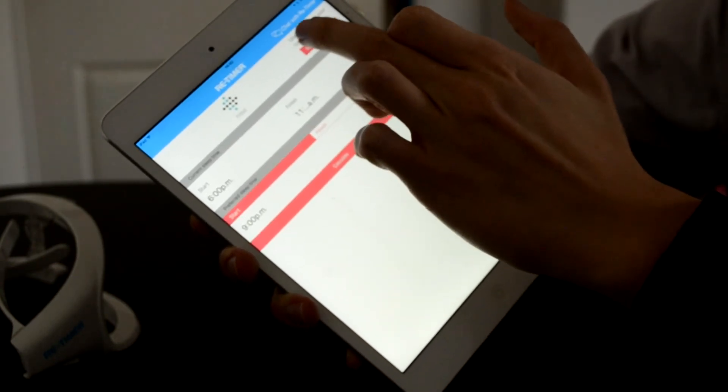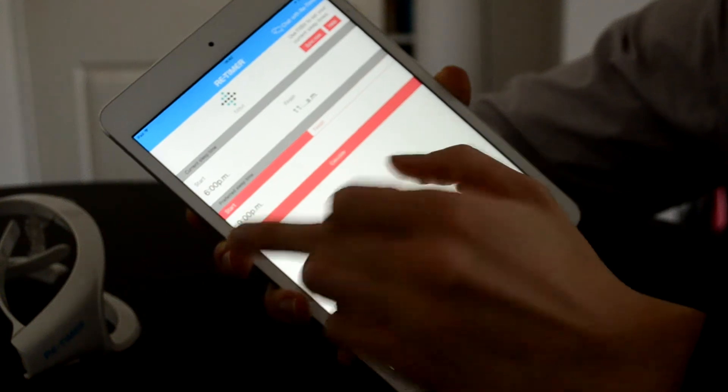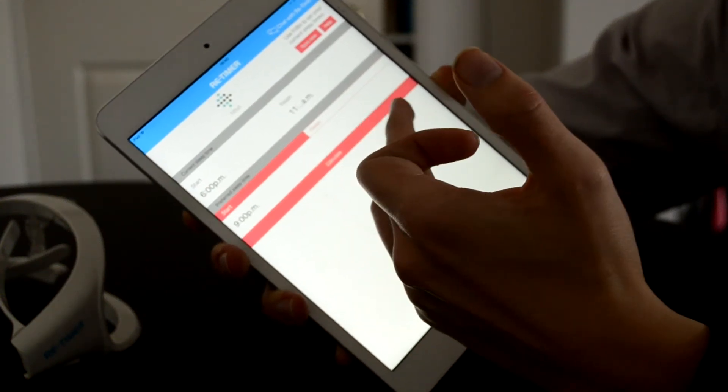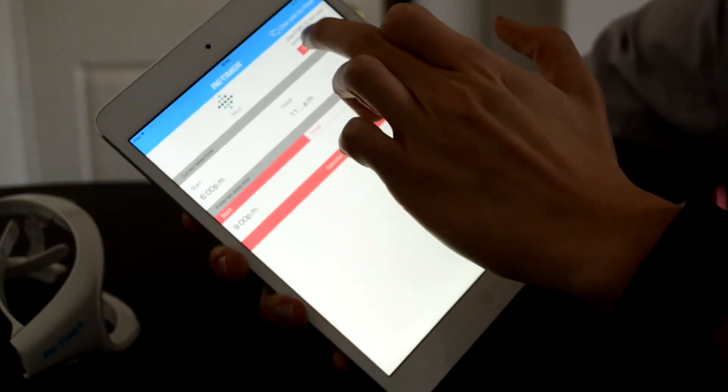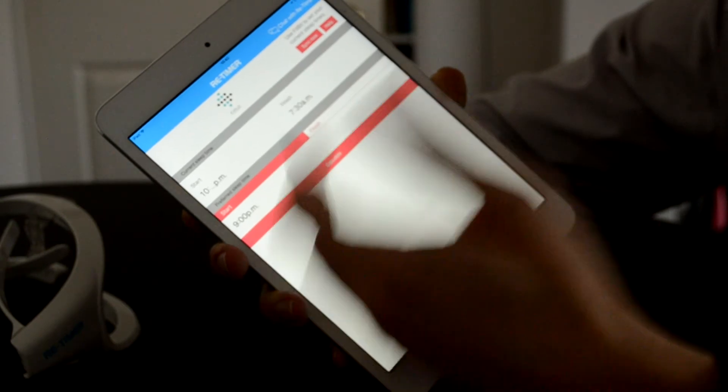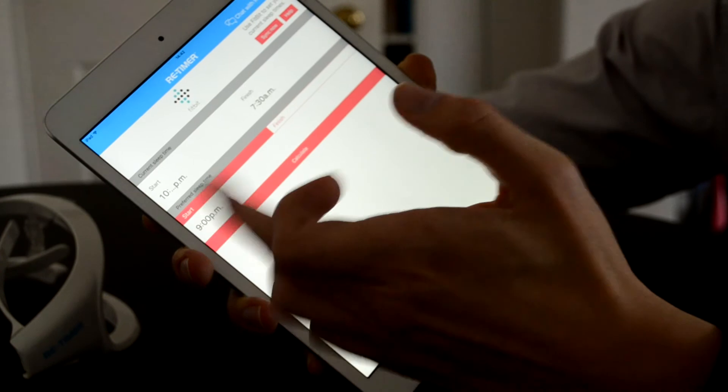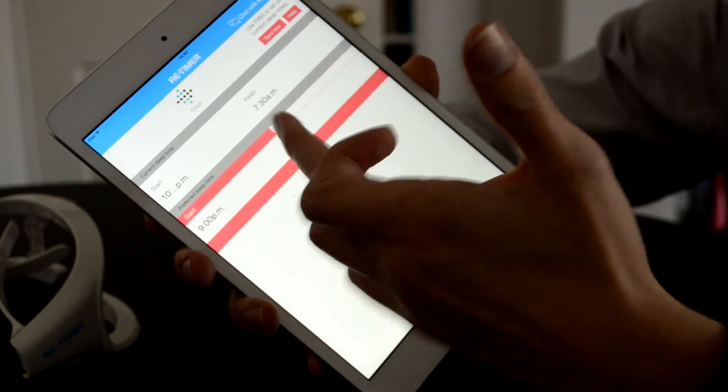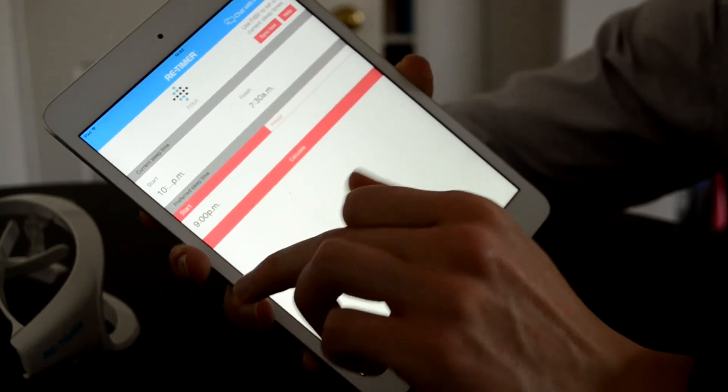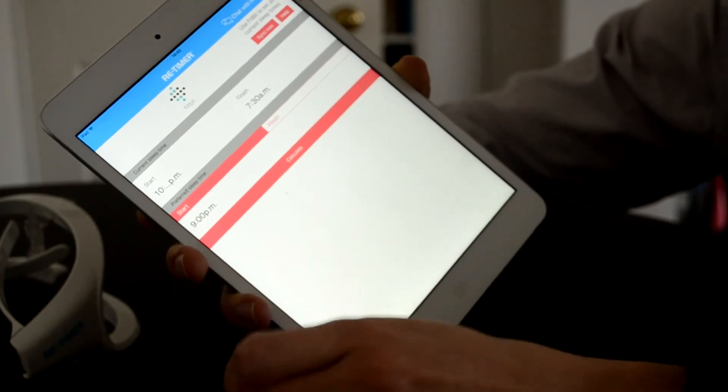Like I said, you can sync it with your Fitbit. So, if we just hit sync now, because I definitely don't fall asleep at 6pm, wake up at 11am, then that should, there we go, change to my current sleep cycle, which is 10pm and waking up at 7:30am, which is something that I've altered over the past week whilst using the Retimer.